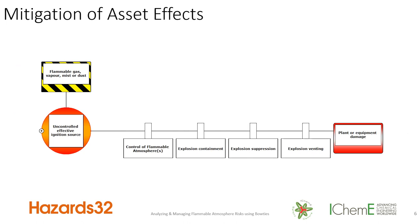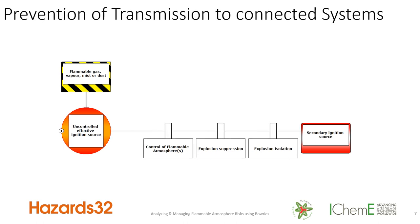Similar considerations apply for the impact on assets — plant, equipment, and structures that could be damaged — but they are generally there all of the time, so occupancy or exposure doesn't contribute to the overall risk reduction. The other measures — containment, suppression, venting, and control of atmospheres — remain relevant. And to prevent transmission to a connected system, you want to suppress the explosion or isolate it, having some means to isolate the primary and secondary locations.